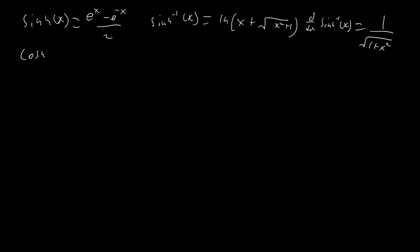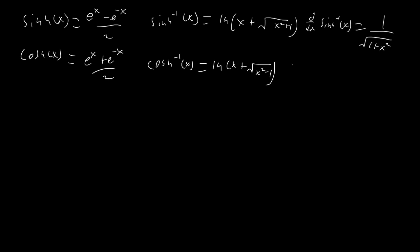Cosh(x) is very similar — it's just got that negative sign flipped to plus, so it's (e^x + e^(−x)) / 2. Cosh⁻¹(x) is of course the inverse function, and it's almost the same with a quick change. Similarly, the derivative of cosh⁻¹(x) is 1 / √(x² − 1).